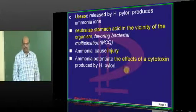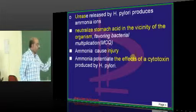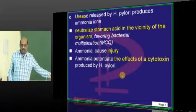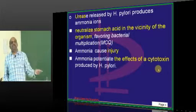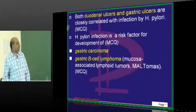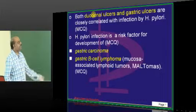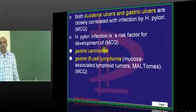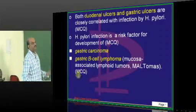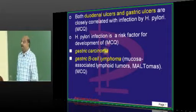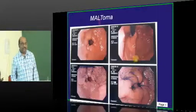Since H. pylori does not invade, how does it cause injury? It produces cytotoxins. The cytotoxins produced by H. pylori, combined with the ammonia generated by urease-mediated urea splitting, are very damaging to gastric cells. This leads to not only gastric ulcer but also duodenal ulcer. H. pylori is also a risk factor for gastric carcinoma, gastric B-cell lymphoma, and especially a type of lymphoma called MALToma — Mucosa-Associated Lymphoid Tissue tumor.